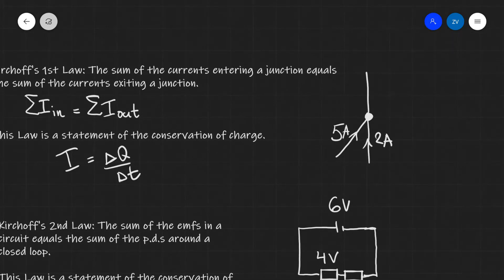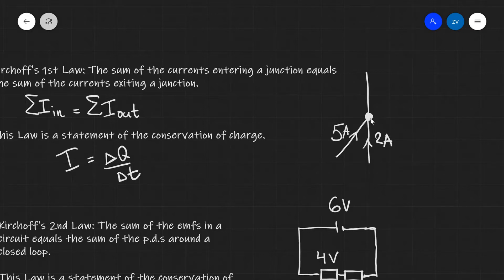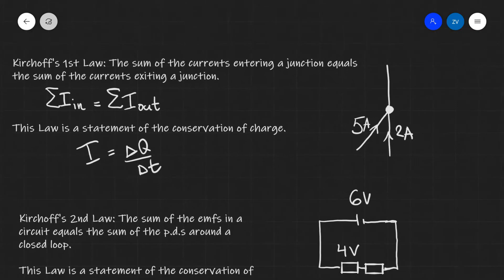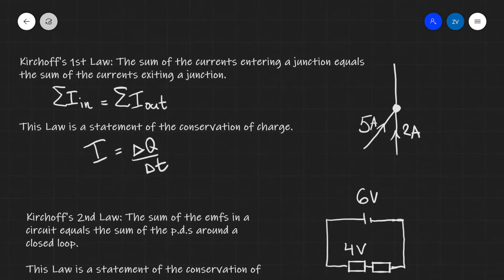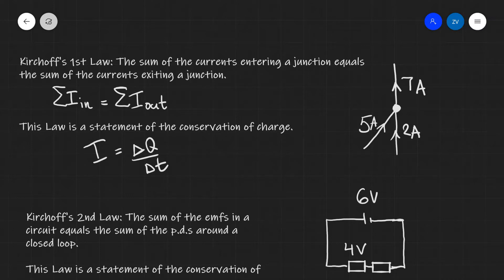This can be visualized in this circuit over here. For instance, if we had 5 amps and 2 amps going into a junction, there will be 7 amps exiting the junction.